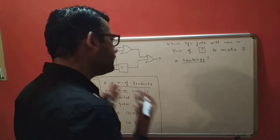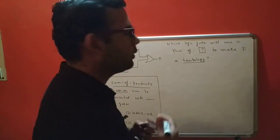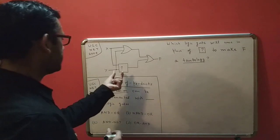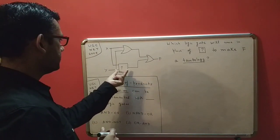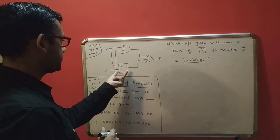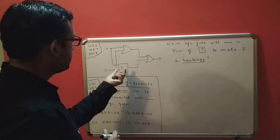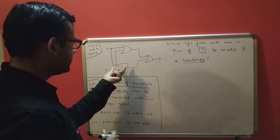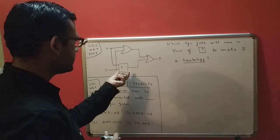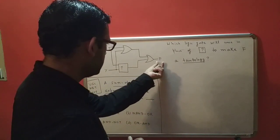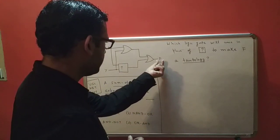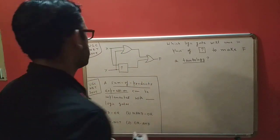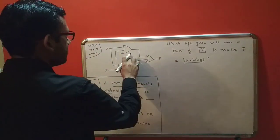We'll get a value of one for any combination of inputs. For every combination of inputs we'll get a one as the output. So which logic gate, when substituted in place of this empty box, would give us a one for this function f for every possible combination of inputs?